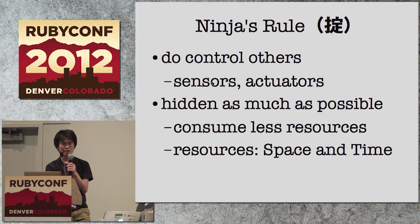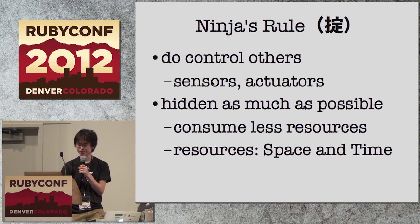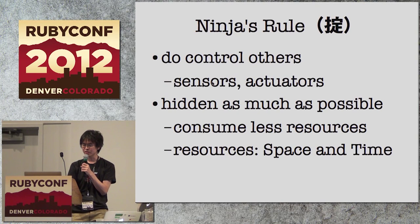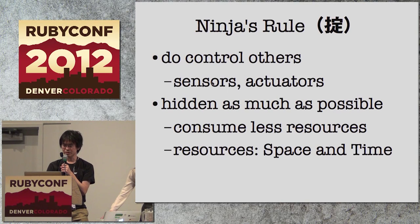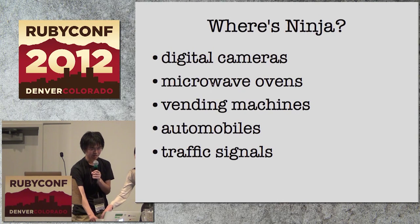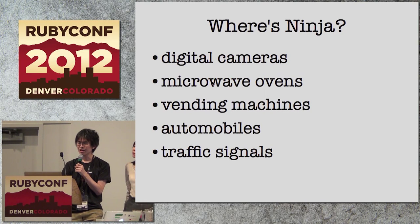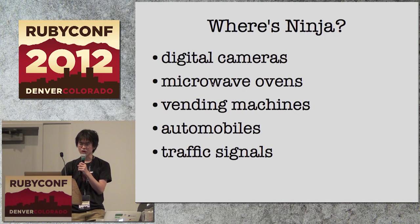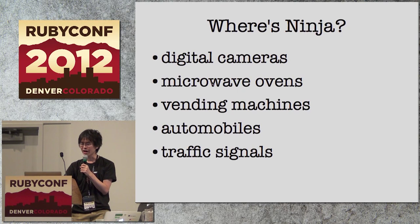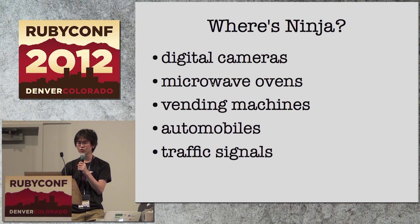Even if Ruby is widely used in the Samurai world, the same Ruby might not fit the Ninja world. The main purpose of embedded systems is controlling other devices such as sensors and actuators. A very important need is to be hidden as much as possible — in other words, to consume less resources. The resources here are not only memory space, but also time. Many Ninjas are hidden behind our daily lives — we'd like to use mRuby with them.